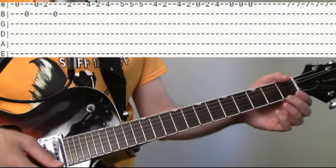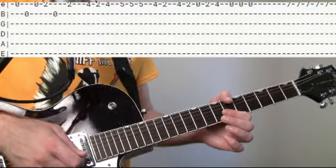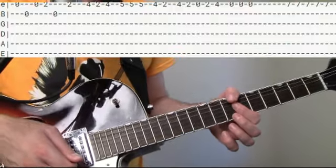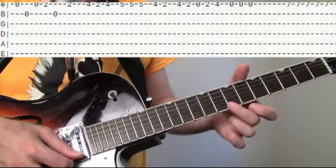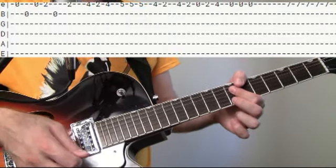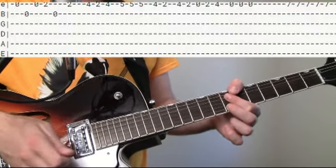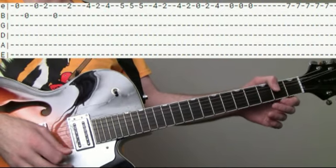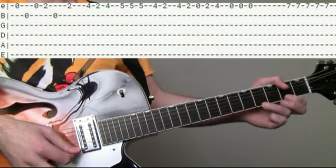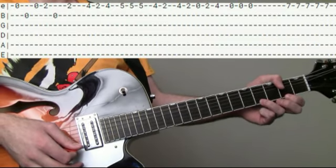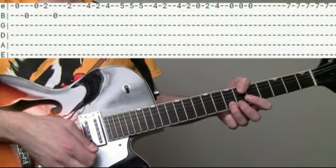And then here we come up to the 7th fret. And if you have a whammy bar, you're going to want to be wailing on that thing for large parts of this too. So yes. 7th fret here. Just kind of give it some whammy there. Tremolo.